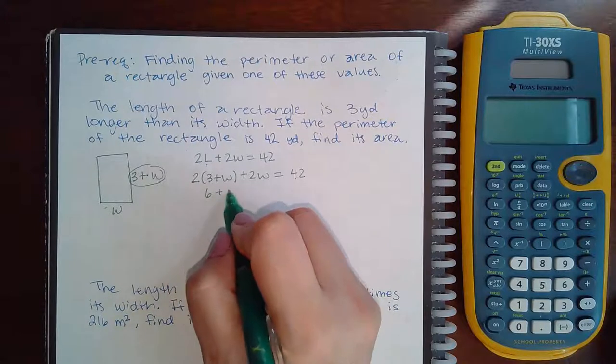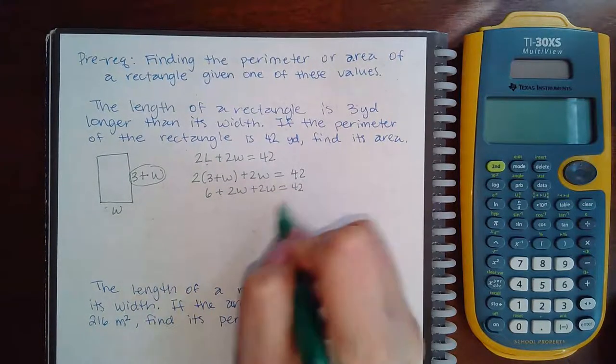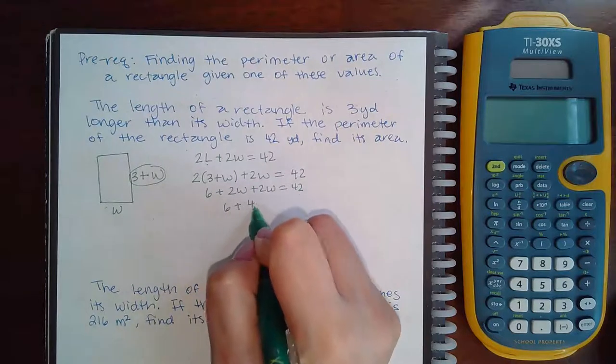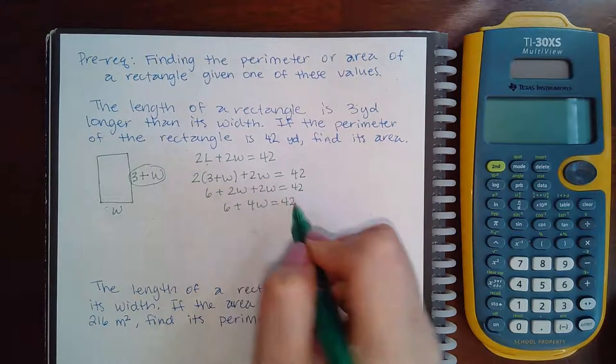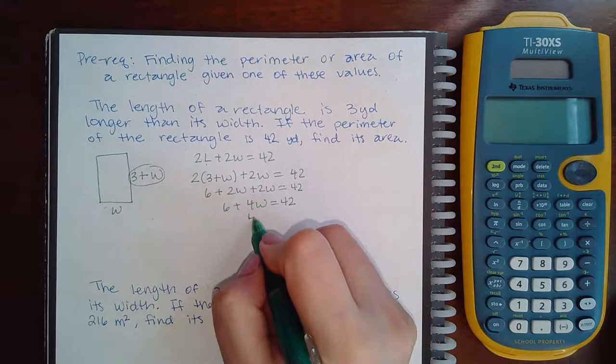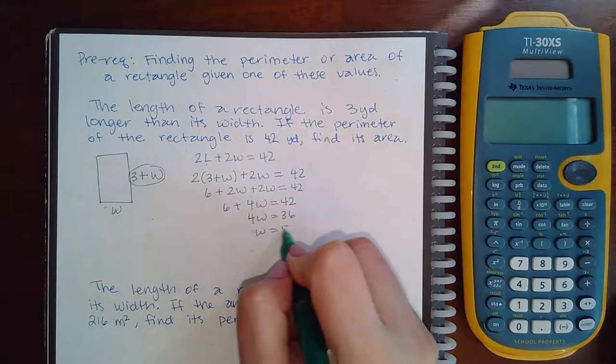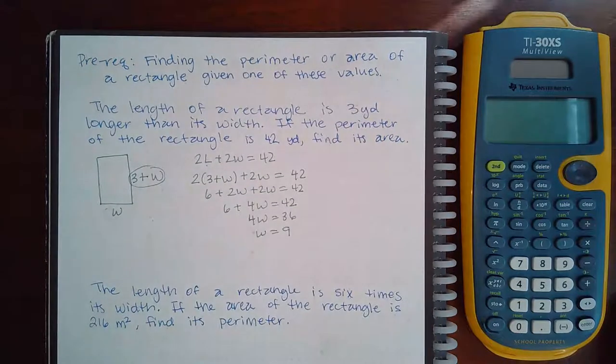So if I distribute that 2, I get this equation, and if I combine my like terms, I get this equation. If I subtract my constant over, I will end up with 36, and if I divide both sides by 4, I end up with W equals 9.